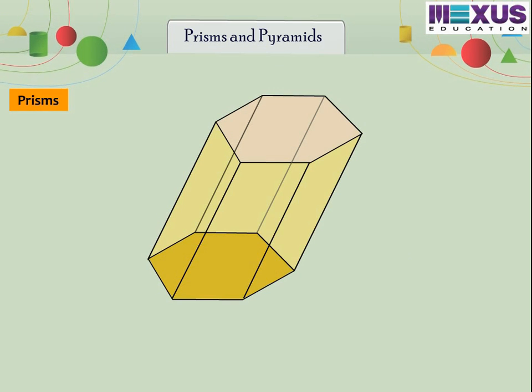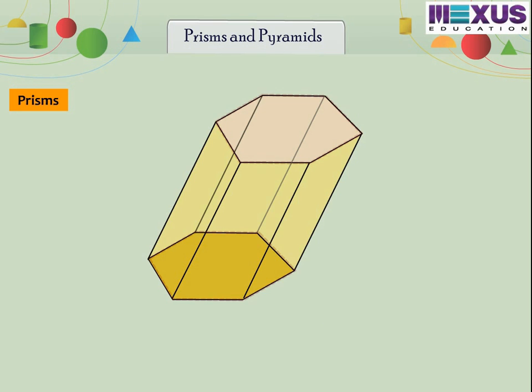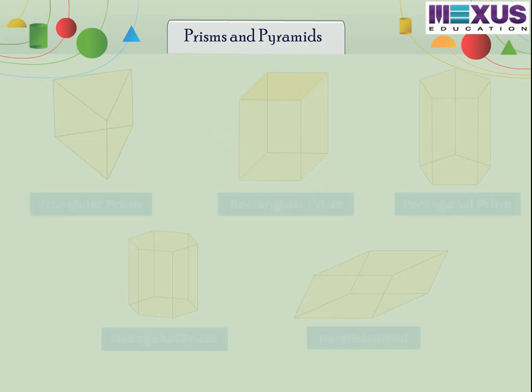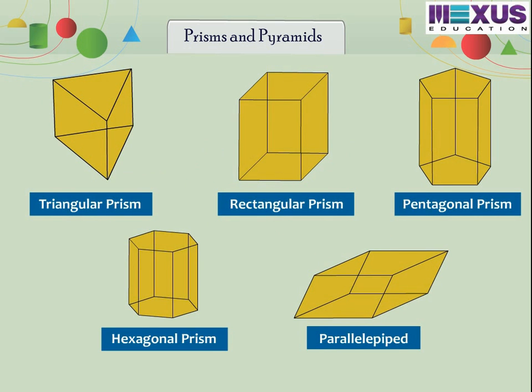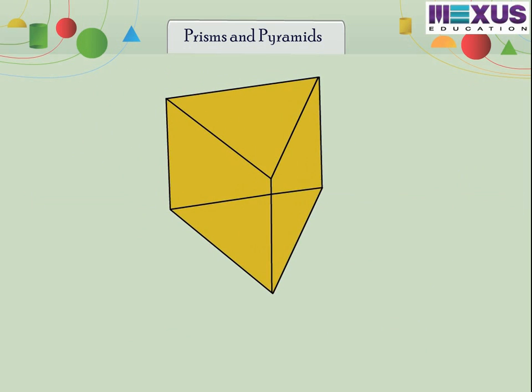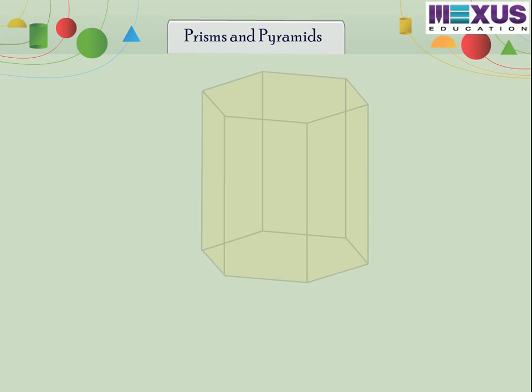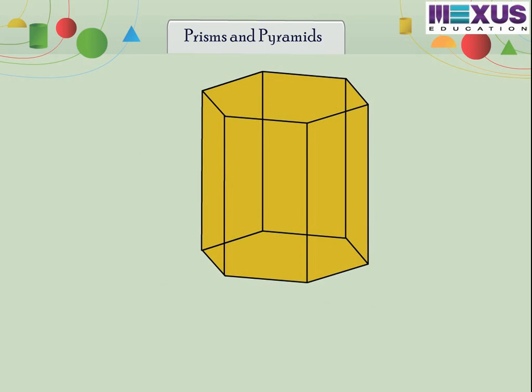A prism is a polyhedron in which two faces are parallel and congruent polygons called its bases and whose other faces are parallelograms called its lateral faces. There are many types of prisms. The type of prism is determined by the shape of the base. For example, a triangular prism will have triangular bases while a square prism will have square bases. A hexagonal prism will have hexagonal bases and so on.